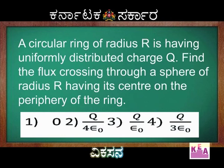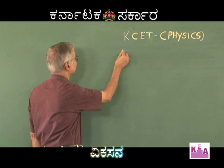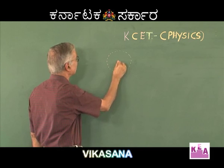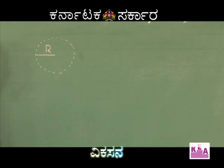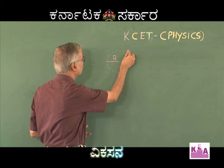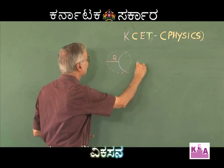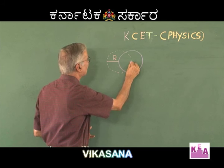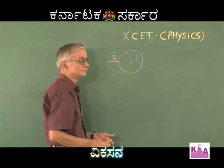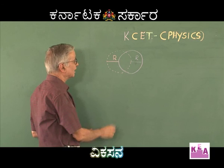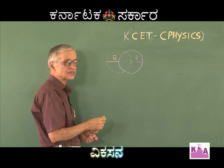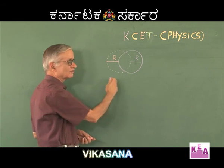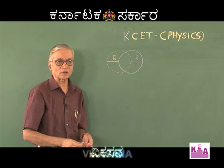Suppose the dotted line represents the ring and the radius of the ring is R. Let the solid sphere be shown by a thick line. This sphere is also of radius R, and the center of the sphere lies on the periphery of the ring, as required in the problem.